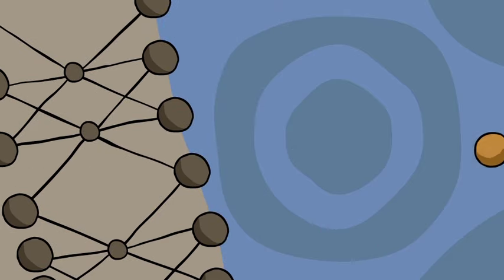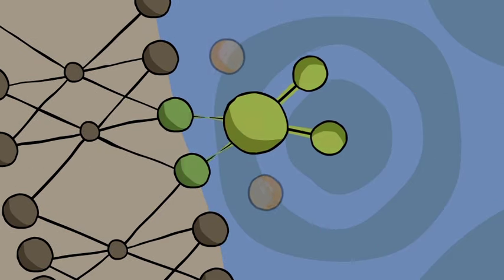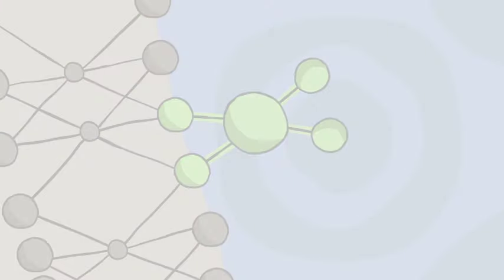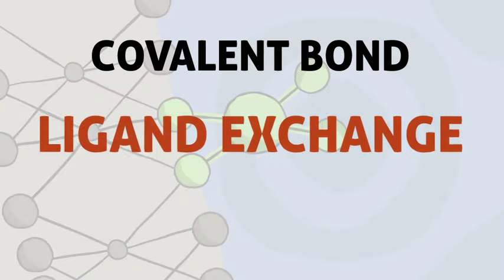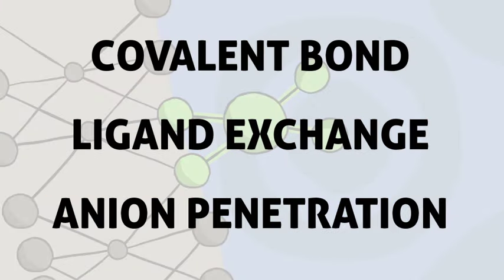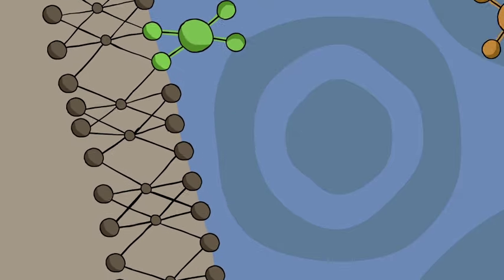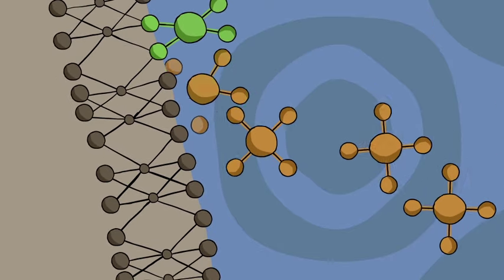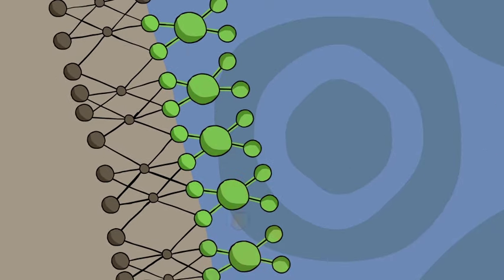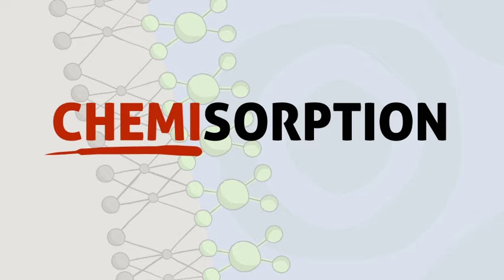Without water though, something different happens. The ion shares some electrons with the surface. This is called a covalent bond, ligand exchange, or anion penetration. This means that a brand new substance forms at the boundary of the surface. The formation of a strong covalent bond during adsorption creates a new chemical compound. So this process is called chemisorption.